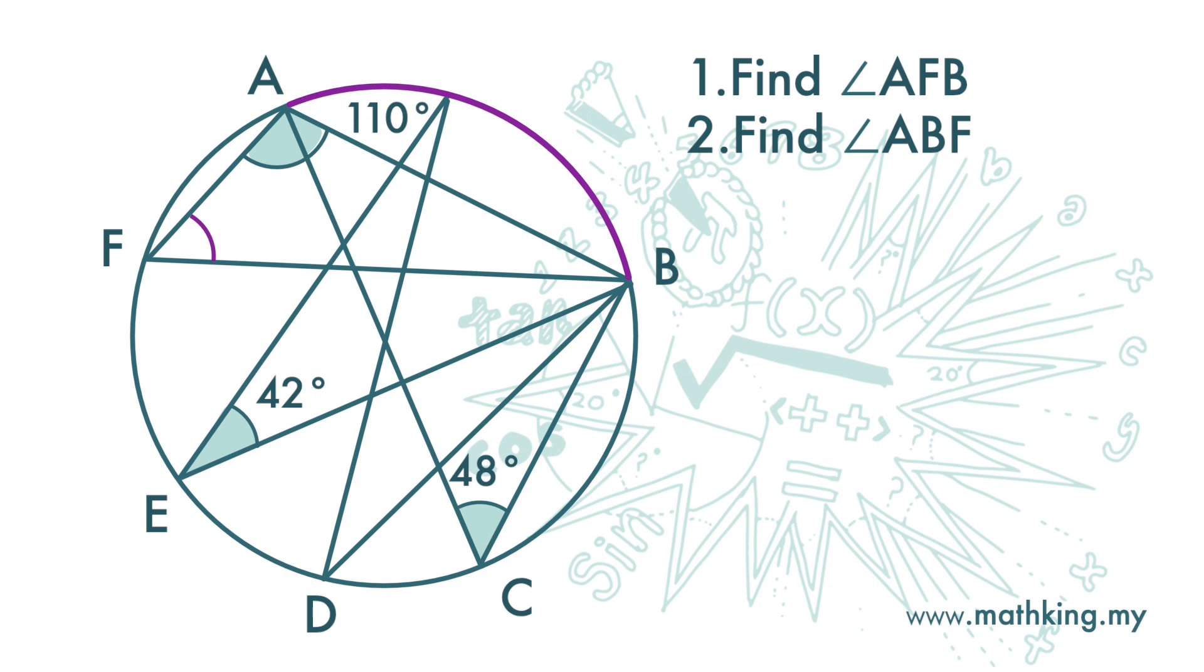So next, we will want to find which angle at circumference that is subtended from arc AB that is with known value. And that is angle ACB. So angle AFB is also 48 degrees.